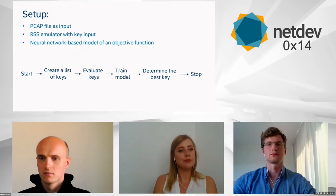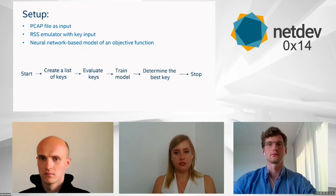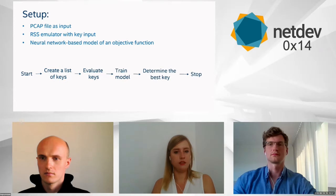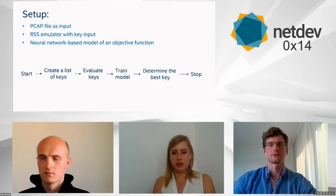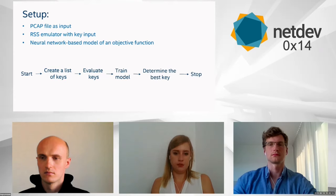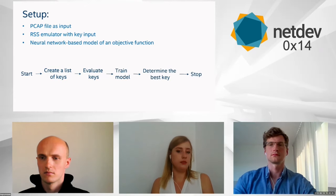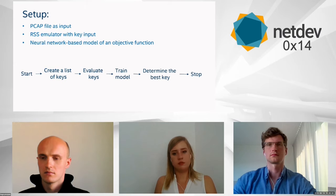The proposed solution at this stage uses a pre-collected PCAP file and an RSS software emulator to evaluate collected data. This data is used to train a neural network-based model of an objective function, enabling us to determine the best possible RSS hash key. The neural network will be trained manually by engineers at this stage, and the solution works offline in user space without interrupting the platform's standard routing mode.